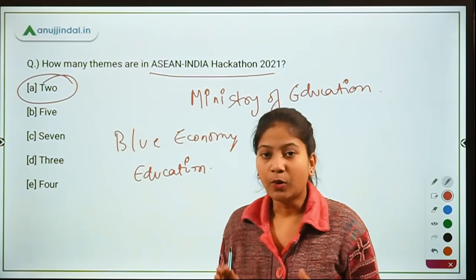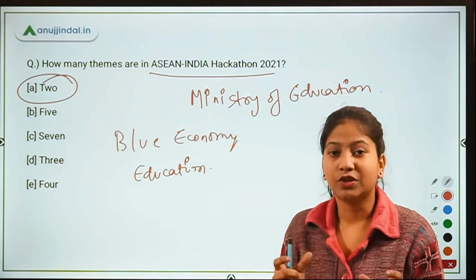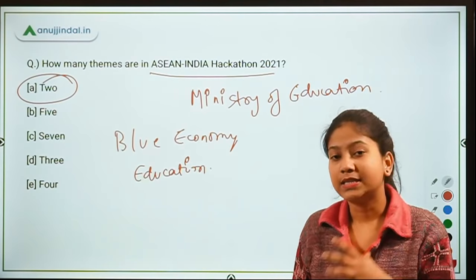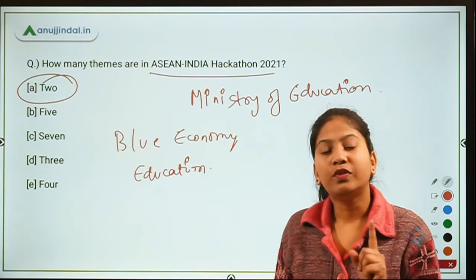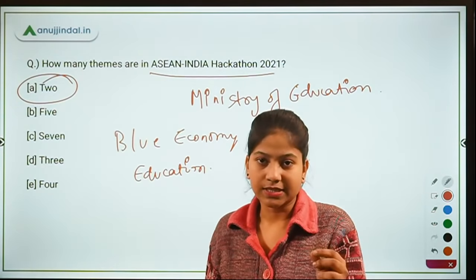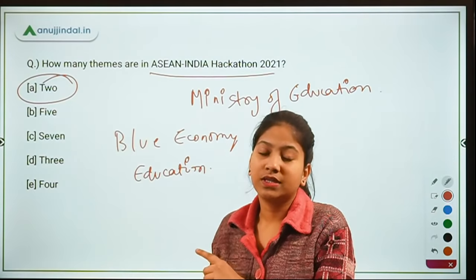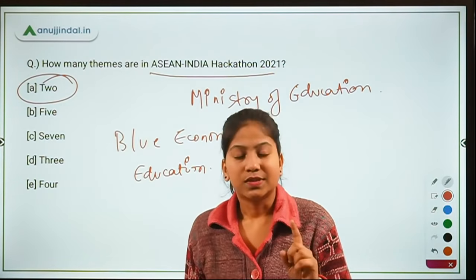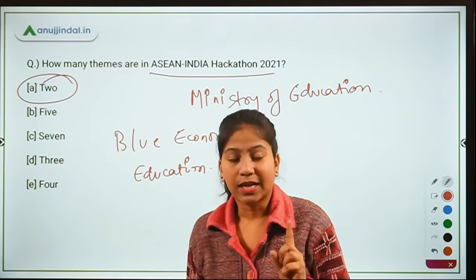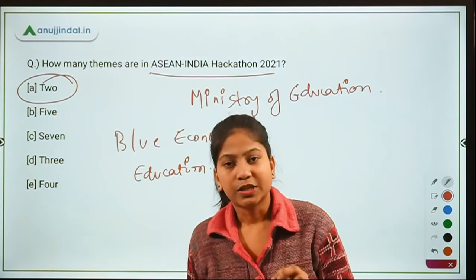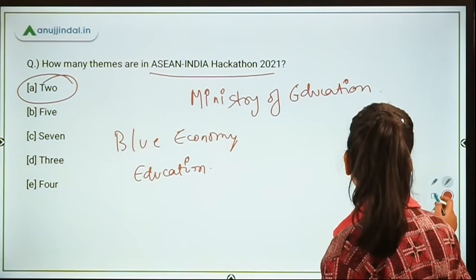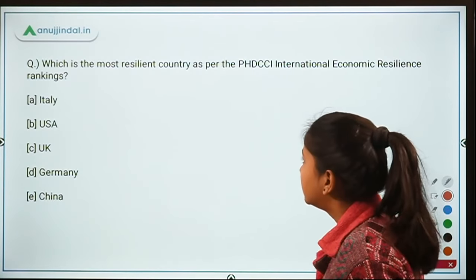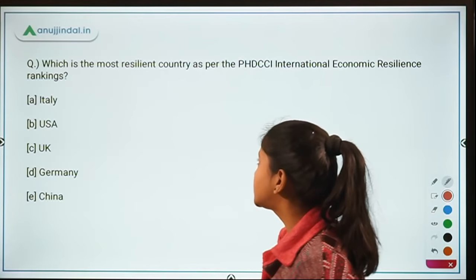ASEAN is an important regional organization. Your task is to tell me the names of the 10 countries that are part of this organization in the comment section below. Now, the next question is: which is the most resilient country as per the PHD CCI International Economic Resilience Ranking?